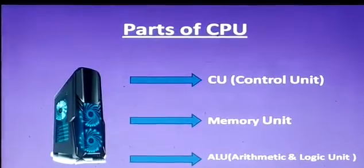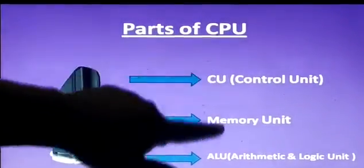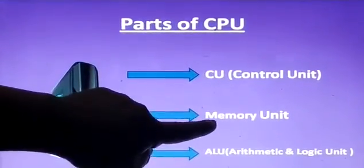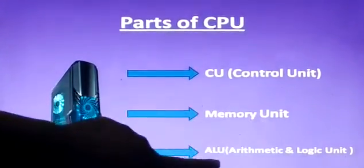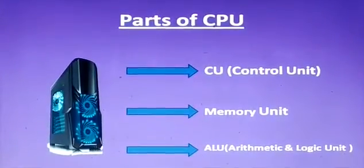Now, study parts of CPU. CPU has three parts. CU, control unit. MU, memory unit. Third is ALU, arithmetic and logic unit. Let us study one by one.